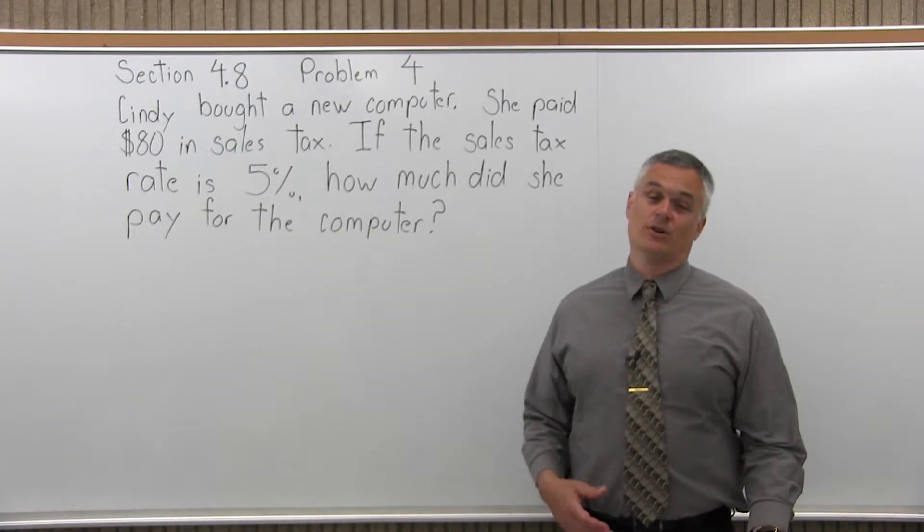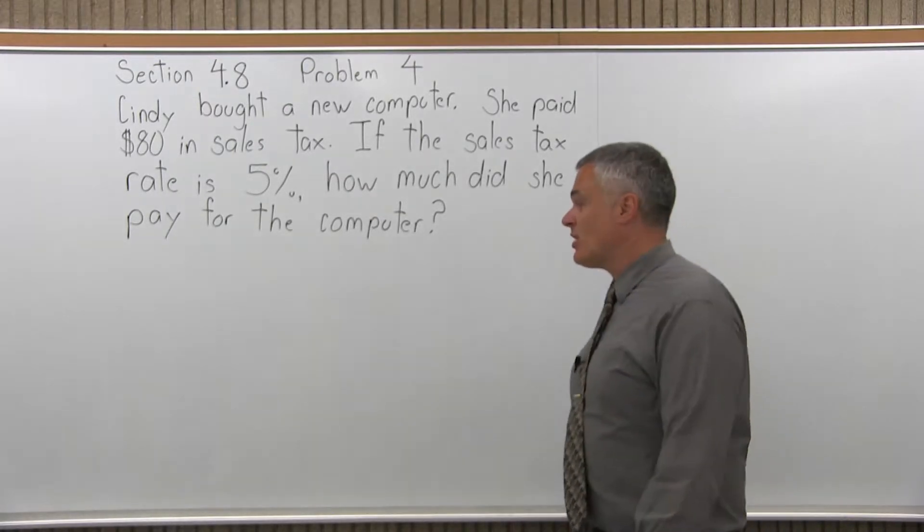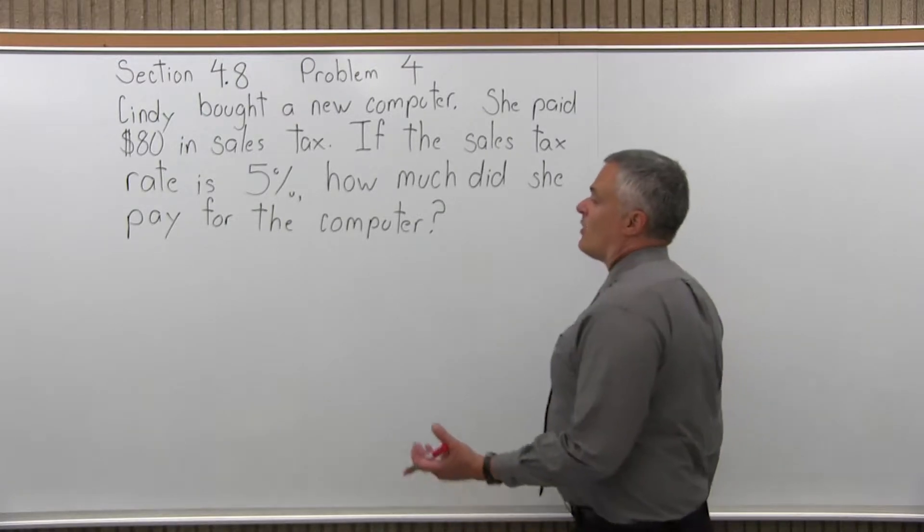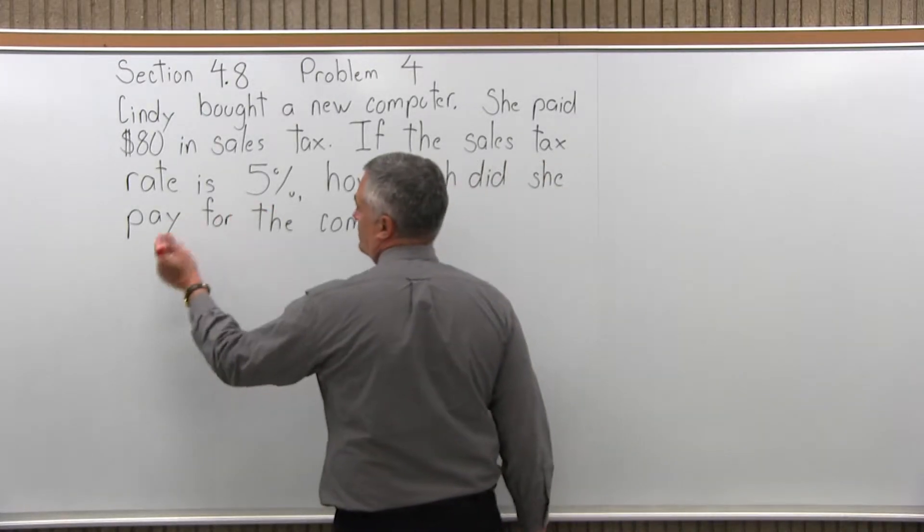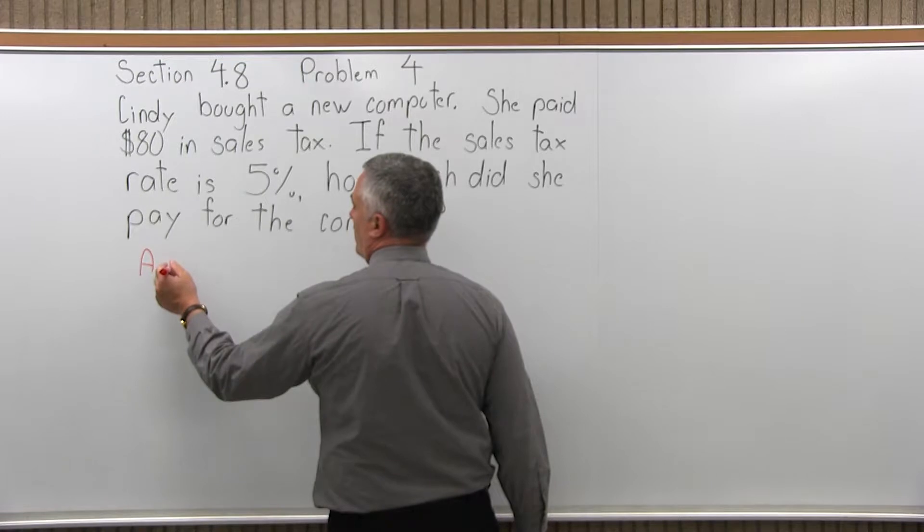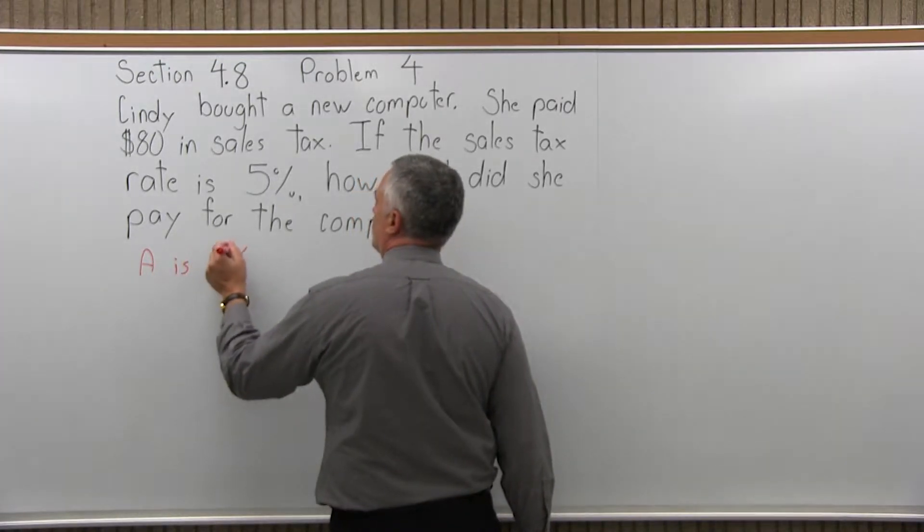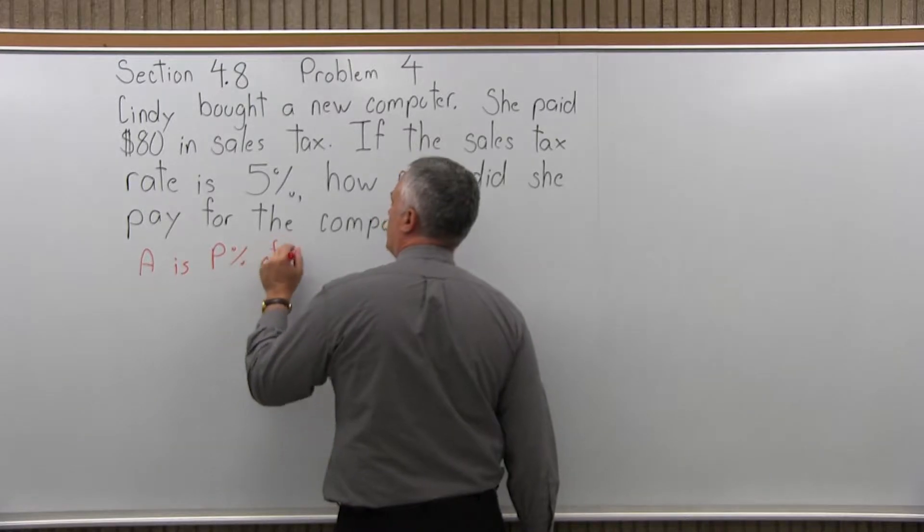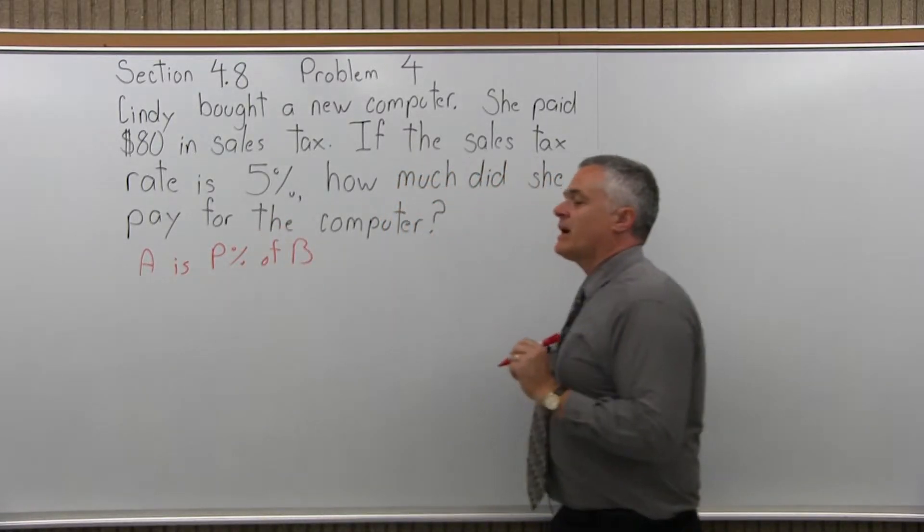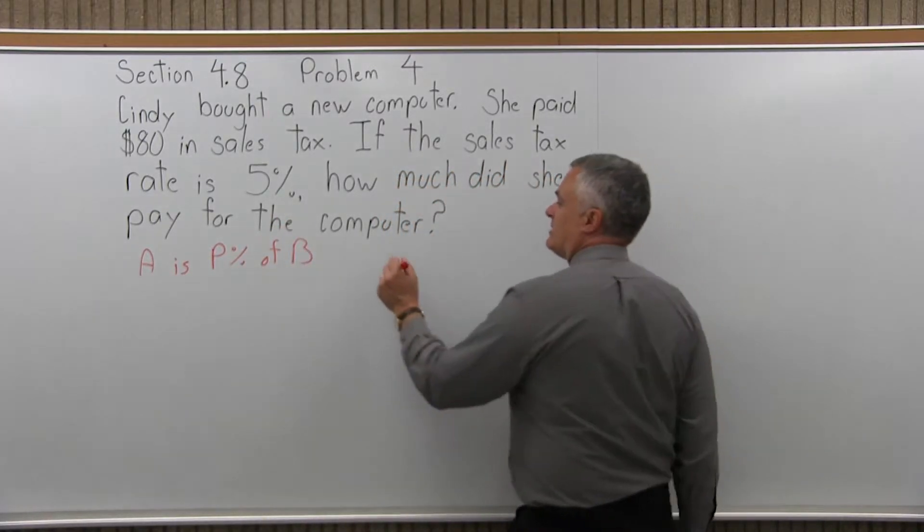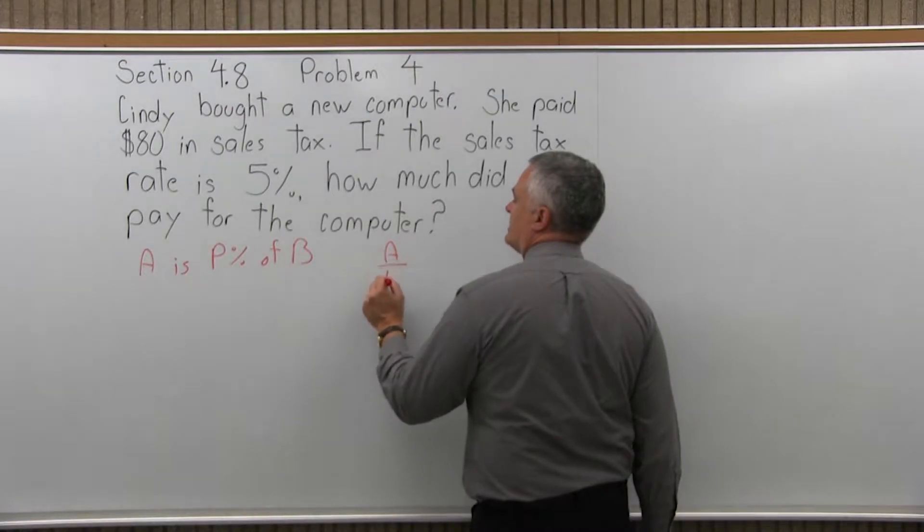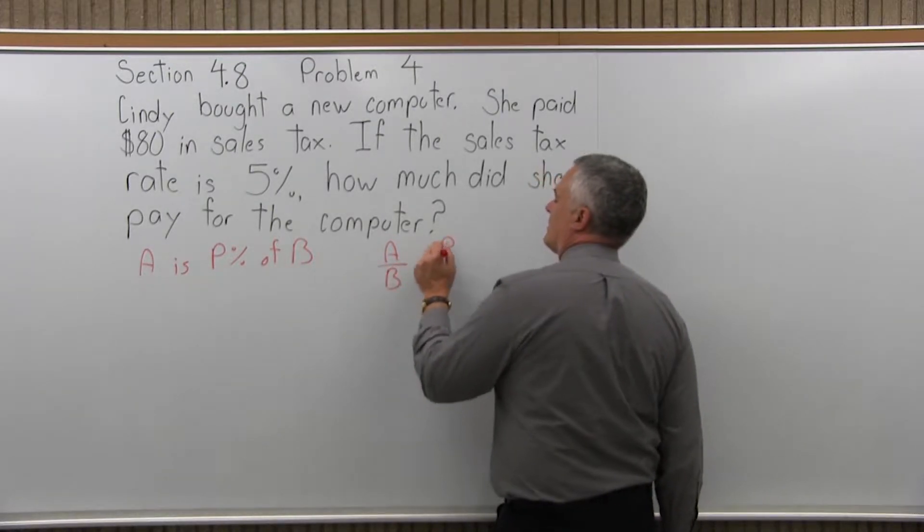So you know the tax is $80, so what did the computer cost? Well, what I like to do with any type of problem with percents is see if I can write the problem in the form A is P percent of B. And if I can write it in that form, that means I can use this formula that I like, which is A over B equals P over 100.